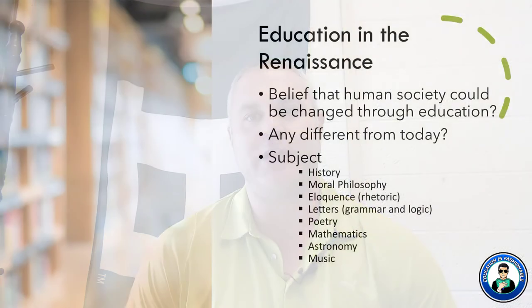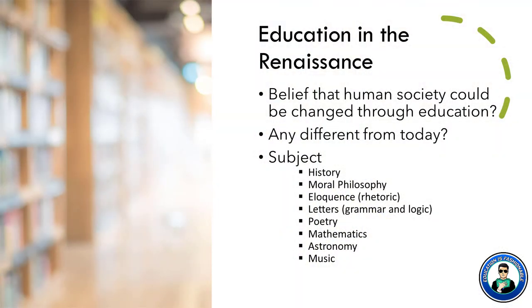Education in the Renaissance has some themes that appear later on. One connection I can make is to the Enlightenment: the Renaissance idea is that society can be changed through education. When we get to the Enlightenment, the idea is that society can be changed more broadly — it's not necessarily limited to education; it goes beyond that. We'll get further into that later.